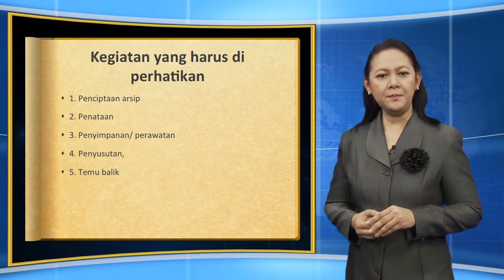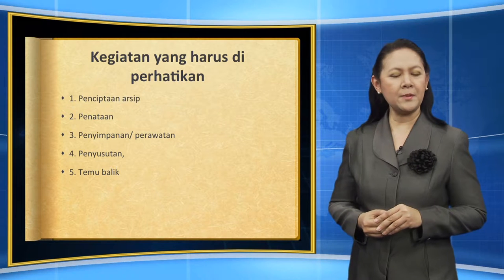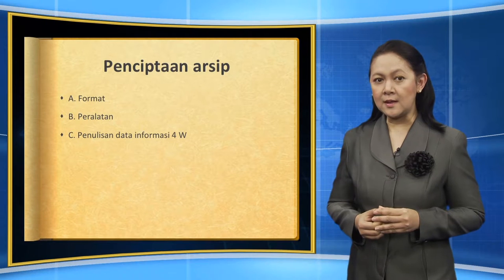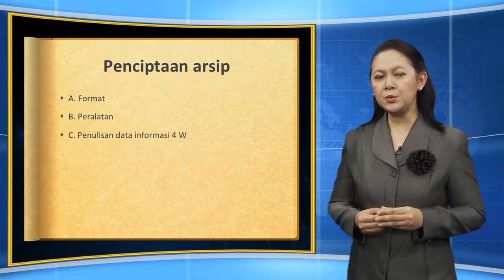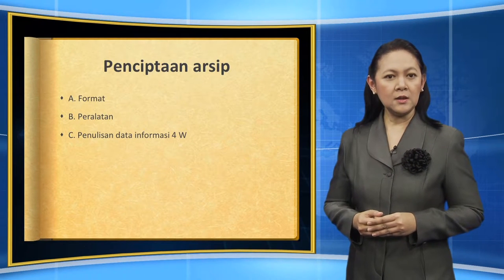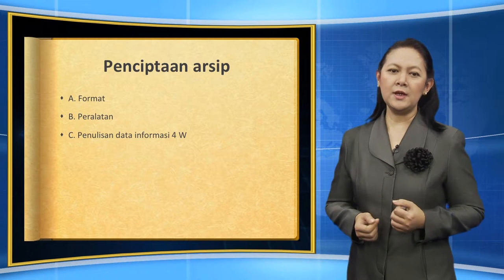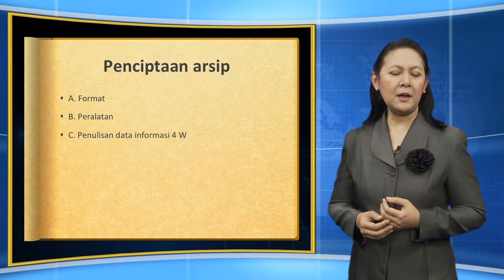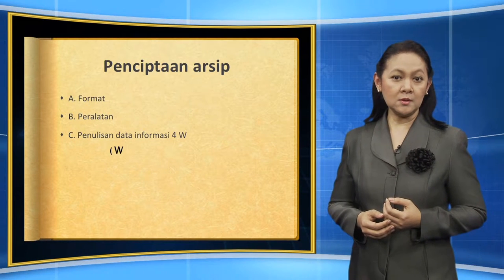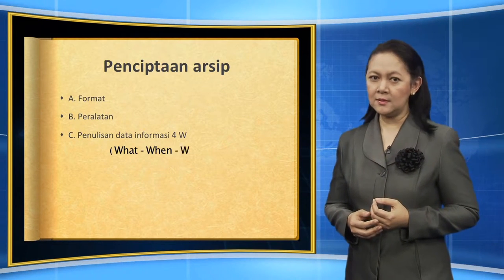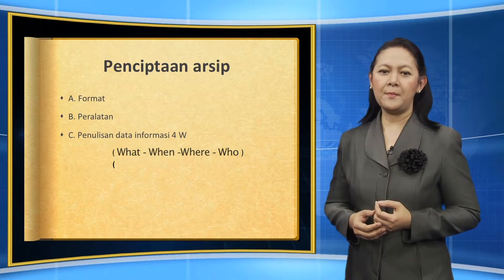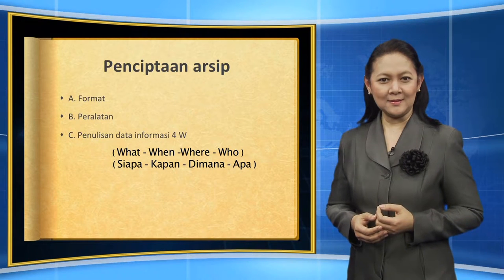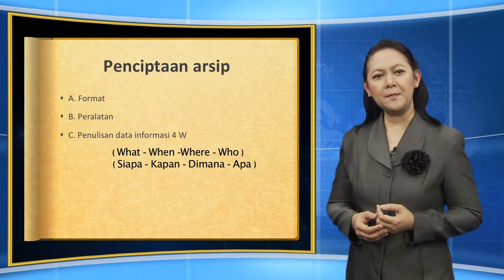Penciptaan arsip — ada beberapa hal yang harus kita perhatikan dalam penciptaan arsip. Satu adalah formatnya, format ataupun bentuk dari arsip itu sendiri. Kedua adalah peralatan. Kemudian penulisan data informasi yang mengandung empat W: what, when, where, and who — atau siapa, kapan, di mana, dan apa. Itu yang harus kita perhatikan dalam penciptaan arsip.